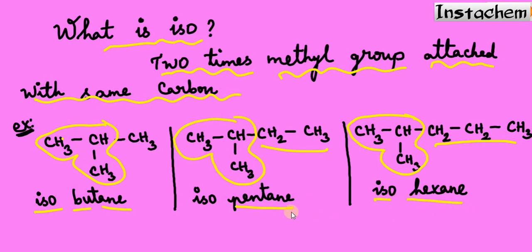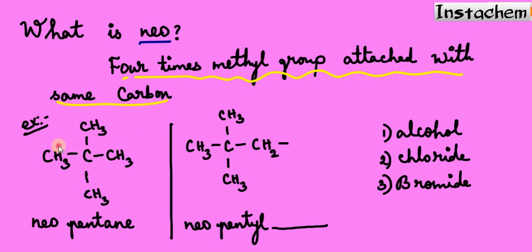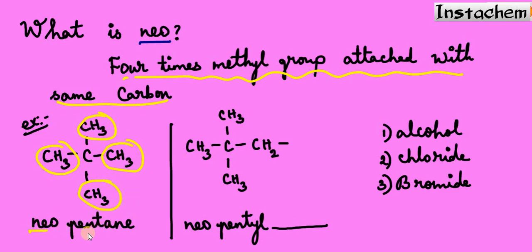Now let's move to the next topic: what is 'neo'? Neo means four methyl groups attached to the same carbon — that is very important. A single carbon is connected with four methyl groups, not ethyl or other groups, only methyl. In that case, you can use the term 'neo'. We have five carbons in total, so this is neopentane.